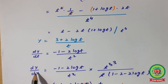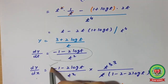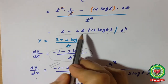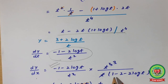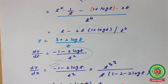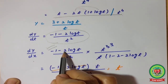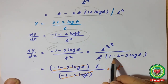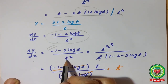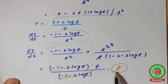To find dy/dx, write dy/dt as the numerator and dx/dt as the denominator. Taking t as a common factor and applying cancellation, the answer is t.